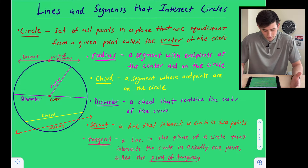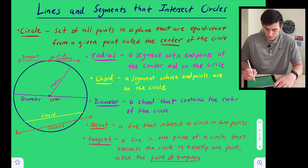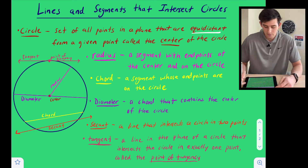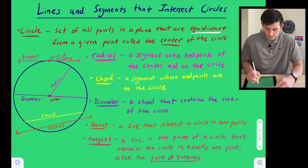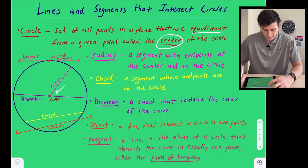So we're going to start off with: what is a circle? A circle is just a set of all points in a plane that are equidistant from a given point. That given point is called the center of the circle. We can see our center of our circle right there.